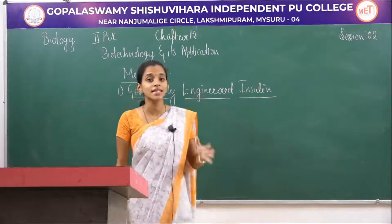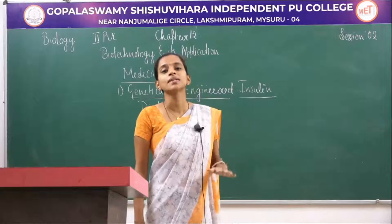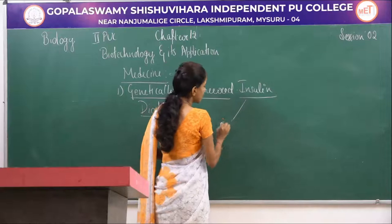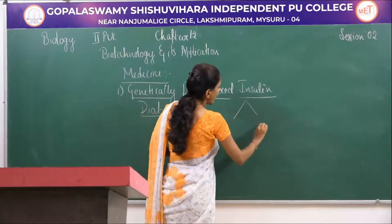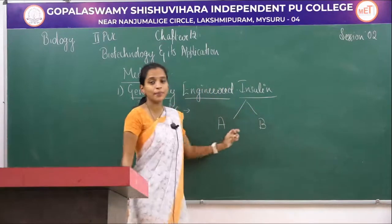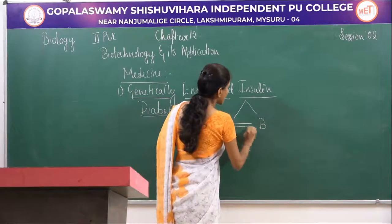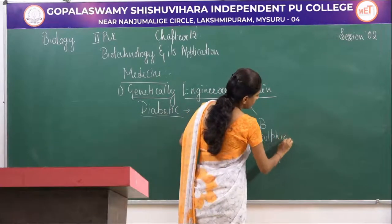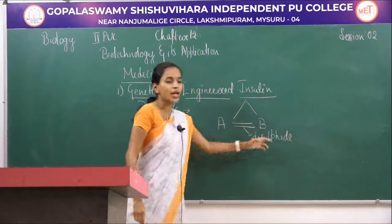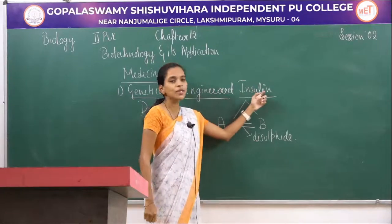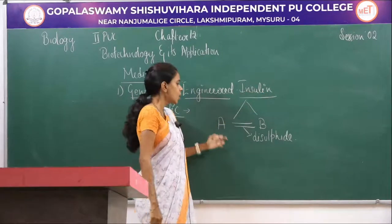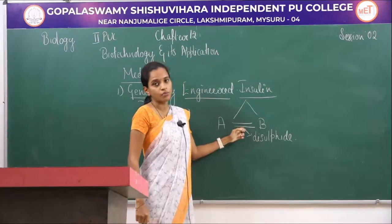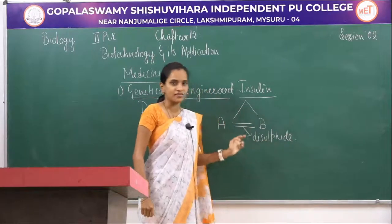It became necessary to understand the components of insulin. Insulin is made up of two chains — an A chain and a B chain. It is a polypeptide chain and these two chains are held together by a disulfide bridge.